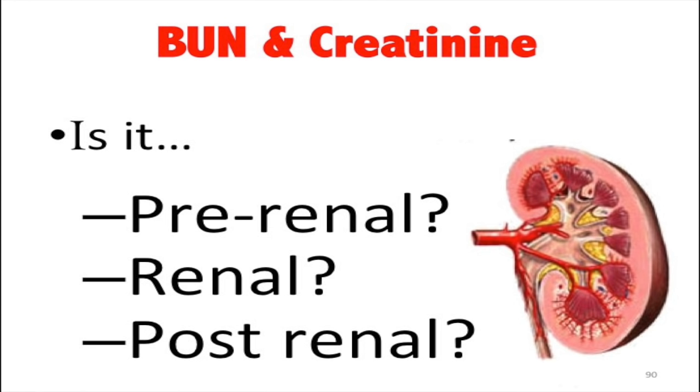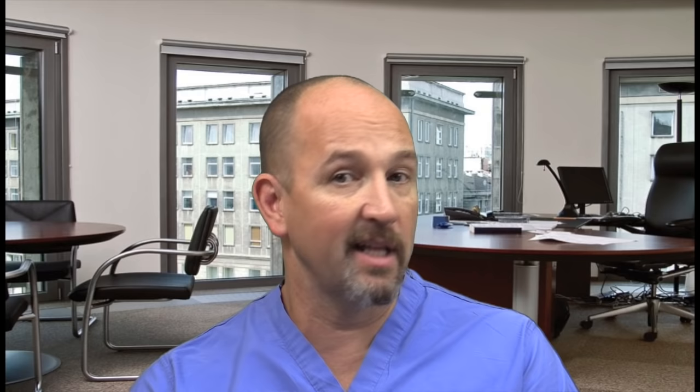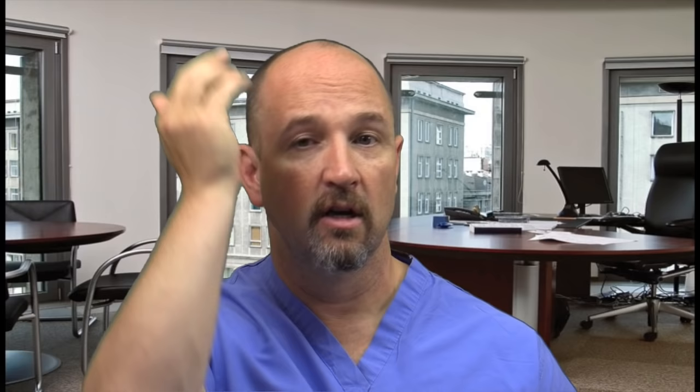BUN and creatinine: normal BUN is about 20, creatinine is about 1. BUN is volatile; creatinine is steady-state. A BUN-to-creatinine ratio greater than 20 suggests pre-renal failure; less than 20 suggests a kidney problem. Bell's palsy is the seventh cranial nerve — it affects the whole face including the forehead and eye. The biggest complication is corneal ulcer because the eye can't close during sleep. Causes include sarcoid, AIDS, Lyme disease, and tumor. Treatment is antivirals and steroids.